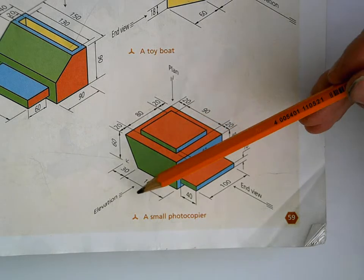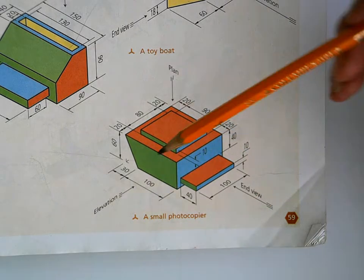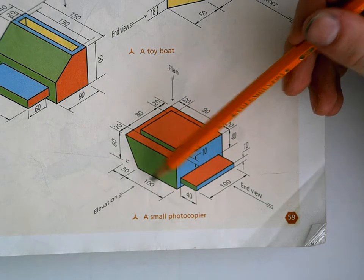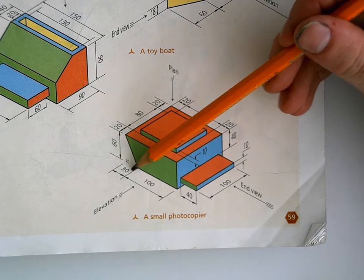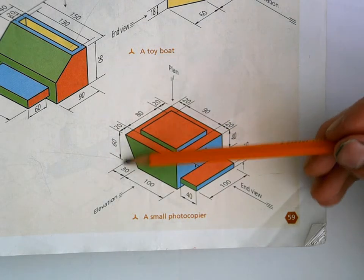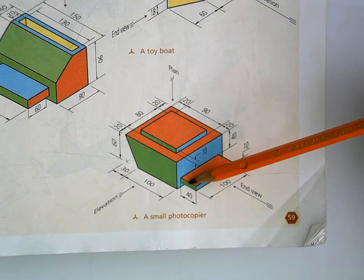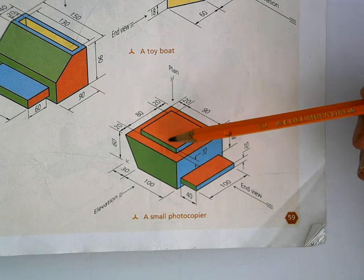Okay, now we're going to start off with our elevation. So we'll see a measurement of 100 at the base, a further 30, an overall height of 60, and then we have to include these little small parts on the side and on the top.